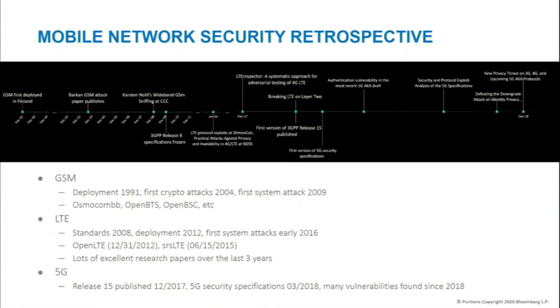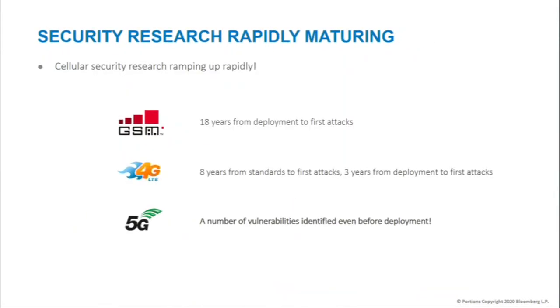LTE standards were published in 2008, deployment was roughly 2012, and the first system attacks were roughly 2016 — myself and a team in Berlin who has been doing excellent work in that area. One of the main reasons was OpenLTE, the stack I used to implement my first IMSI catcher. OpenLTE is dead now; all the research has migrated to SRS LTE. In terms of 5G, Release 15 was published in late 2017, security specifications were out in March 2018, and there are already a lot of issues found. In a nutshell: GSM, 18 years from deployment to first attacks; LTE, 8 years from standard and 3 years from deployment to first attacks; 5G — it's not even live yet and people are finding issues.